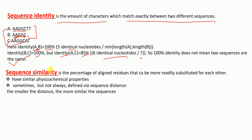Second: sequence similarity. Sequence similarity is the percentage of the aligned residues that can be more readily substituted for each other. It means that these residues might have similar physiological properties. Sequence similarity is sometimes, but not always, defined by a sequence distance — the smaller the distance, the more similar the sequences are. Not only the identity, but also the similar physiological properties of the aligned bases or amino acids or nucleotides is also taken into account when we talk about sequence similarity.